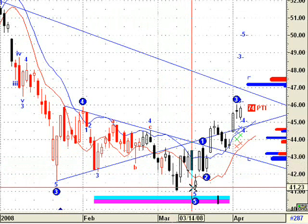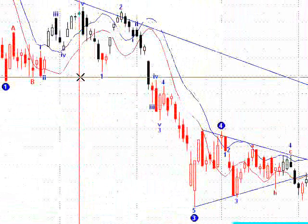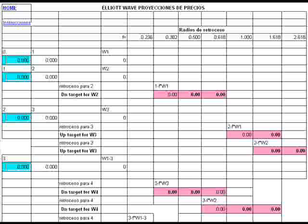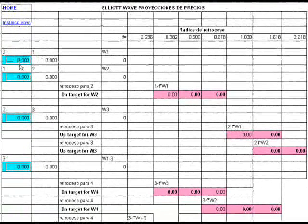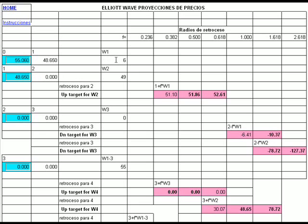Now we will use our site's Elliott Wave Projections Calculator to see how we can predict those targets visible on the chart. Here we have the Elliott Wave Projections Calculator. The retracement ratios are shown here, with the most probable in turquoise, and here are the pivots we have to enter. As in the example, we begin with 55.06, and our first wave runs from there to 48.65. Here we have the extension of wave 1 — about 6 — and here are the up targets for wave 2, taking into account wave 1.